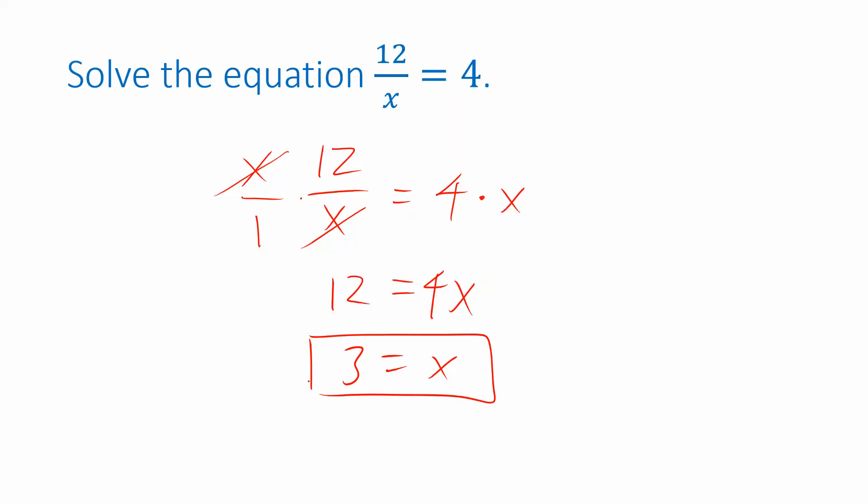So I'm using the same idea as in the simpler problem we started with, but one of my goals is to make sure that I don't leave any variables in the denominator. Here's an example where you have a variable in both the numerator and denominator. But the only one I need to deal with at first is the one in the denominator. That's what I'm trying to avoid.